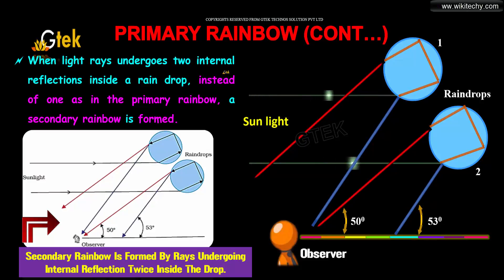What is a secondary rainbow? When light rays undergo two internal reflections inside a raindrop, instead of one as in the primary rainbow, a secondary rainbow is formed.